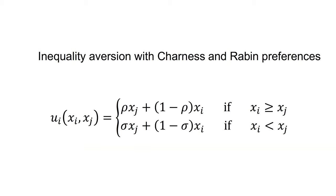Charnas and Rabin (2002) developed a more general utility function that captures the possible forms of distributional preference. An agent's attitude toward others depends on their relative position. The utility function for agent I given payoffs XI and XJ equals rho times XJ plus (1 minus rho) times XI, if XI is greater than or equal to XJ, and sigma times XJ plus (1 minus rho) times XI, if XI is less than XJ. Rho and sigma capture the agent's attitudes towards others: when the agent is ahead, the other player's welfare enters their utility via rho; when the agent is behind, it enters via sigma.